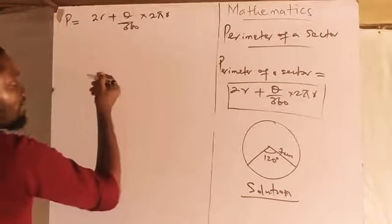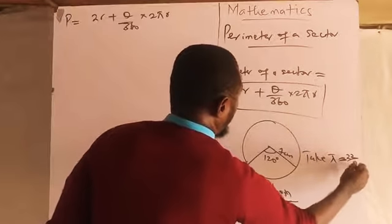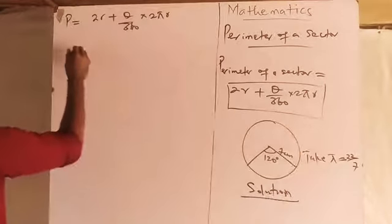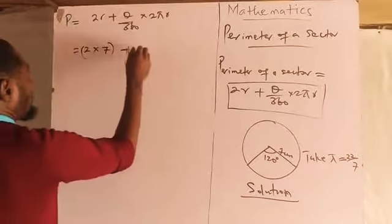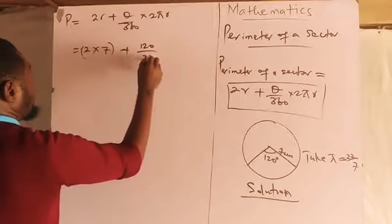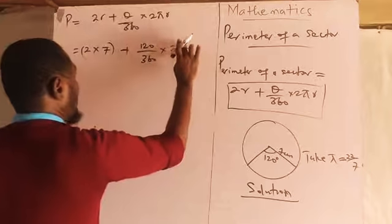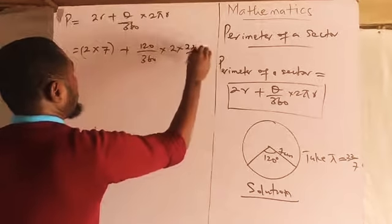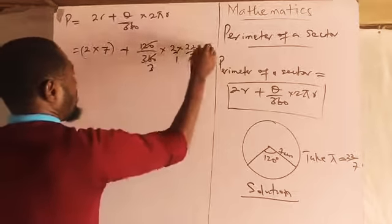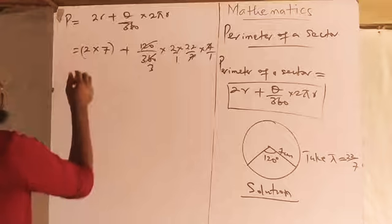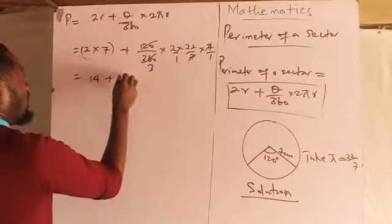We take pi to be equal to 22 over 7. So we have two times seven, plus 120 over 360 times two times 22 over 7 times 7. The 7s cancel, leaving 14 plus 44 over 3.